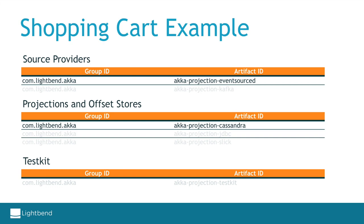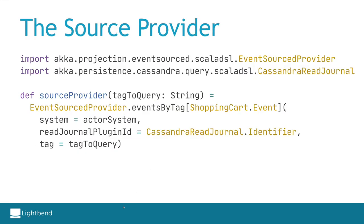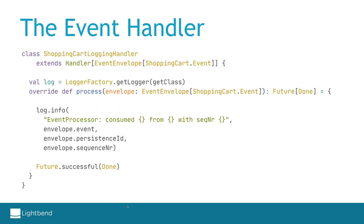We will explore the shopping cart sample from our documentation. Assume we have an event-sourced behavior producing events tagged with 'shopping-cart'. The events are persisted in the Akka Persistence Cassandra journal. We configure a source provider to consume the shopping cart events by building it using the events-by-tag query. Then we define an event handler that will process the events — here we implement an async handler that receives an event envelope and returns a Future Done.